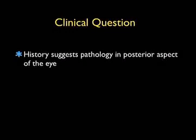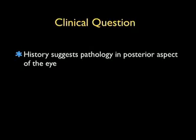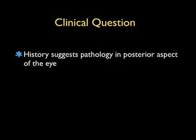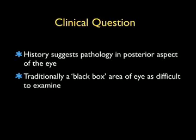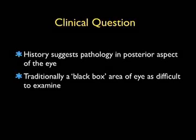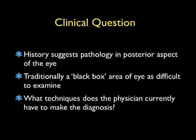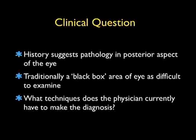The history taken from our patient suggests pathology in the posterior aspect of the patient's eye. And unfortunately, this has traditionally been a black box area of the eye, very difficult to examine using traditional means. This leads us to our clinical question: for physicians working in the emergency department in 2011, what techniques do we currently have to make the diagnosis of pathology within the posterior aspect of the eye? And can we do better than our traditional testing?